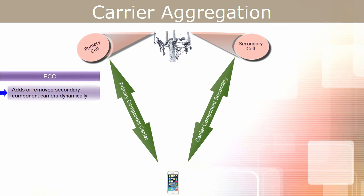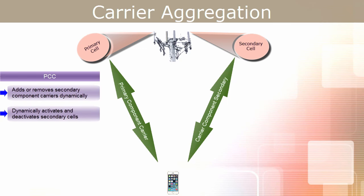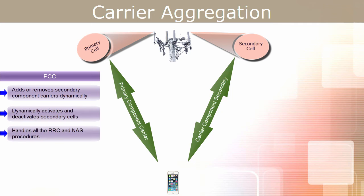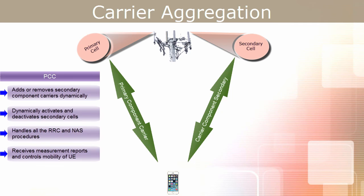Only secondary component carriers from secondary serving cells are added or deleted. The primary component carrier adds or removes secondary component carriers dynamically based on measurement reports received from the UE. It dynamically activates and deactivates secondary cells, handles all the RRC and NAS procedures, and receives measurement reports and controls mobility of the UE. Remember, primary cells can be changed only at the time of handover.